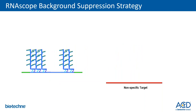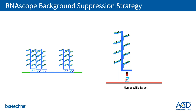What about background suppression? Off-target nonspecific signal amplification is prevented by the requirement of both members of the double Z pair to bind to the target RNA. If only one member of the double Z pair binds, the pre-amplifier cannot bind to that oligo and generate a signal amplification tree. This strategy therefore leads to suppression of background signal and a very clean readout for the end user.